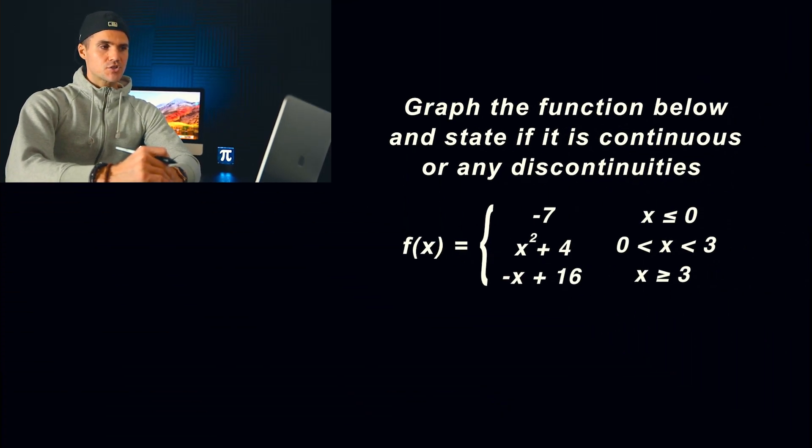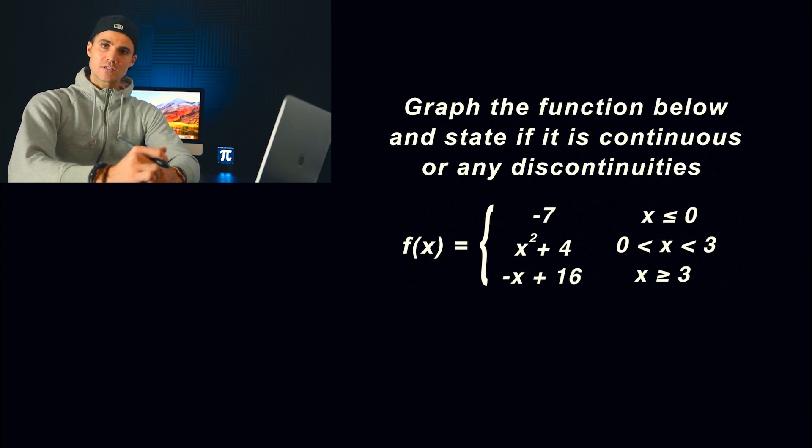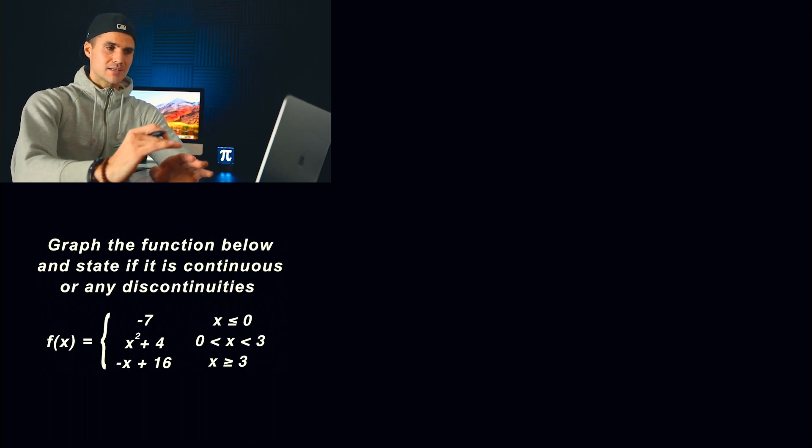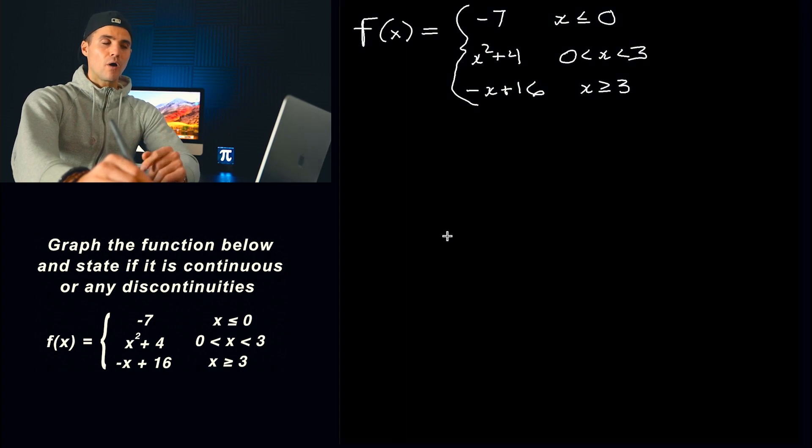So we are given this piecewise function here and we have to graph it and state if it's continuous. And if it's not continuous, we've got to state the points of discontinuity where it's going to be discontinuous. As I've shown in the lecture videos on piecewise functions, hopefully you have watched those because I go through the graphing process in a little bit more detail. This one I'm going to go through a little bit quicker. I like to make tables of values for the different pieces.